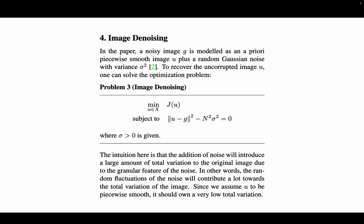And intuitively, we will assume that a clean, noiseless image will have very little total variation, and the existence of noise will add a lot of total variation to the image.